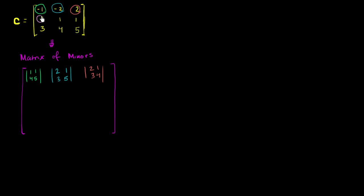For this middle-left element, it's going to be replaced with its minor. We get rid of this row and this column. The minor is the determinant of negative 2, 2, 4, 5.